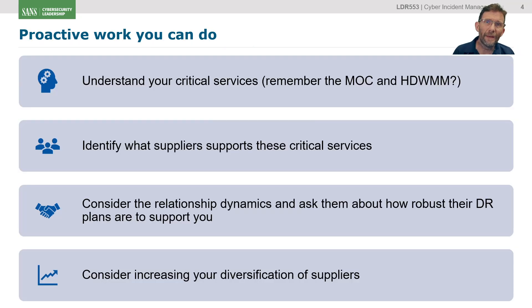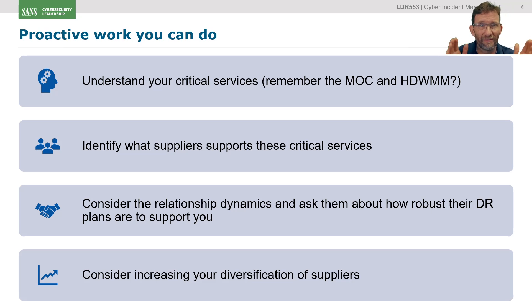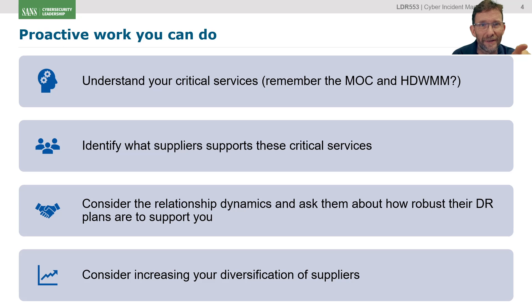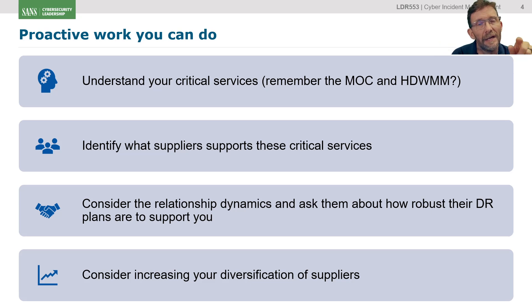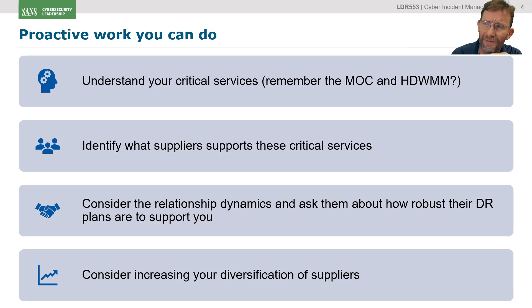So the kind of proactive stuff: things like understanding your critical services. When we were talking about how long does it take to recover from a major compromise — understand what your MOC is, your minimum operating capability. Also understand the HDWMM — how do we make money? Understanding those two things should allow you to work out what your critical services are, and then what suppliers are critical to the delivery of those services. Identify those as being key suppliers. Then maybe reach out to them and say: if there's a major impact to you, what's your disaster recovery plan? And how much can you support us if you have a major impact?